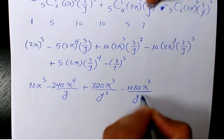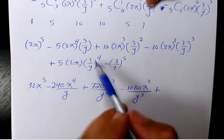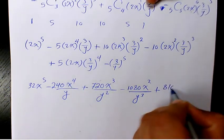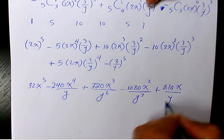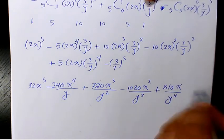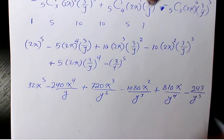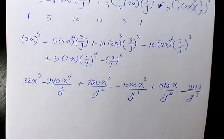x squared divided by y cubed plus 81 times 10 is going to be 810x divided by y to the power of 4 minus 243 over y to the power 5.